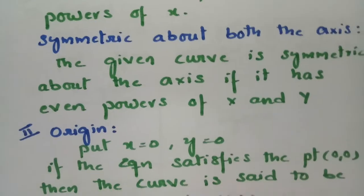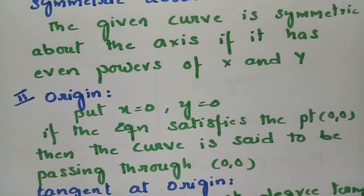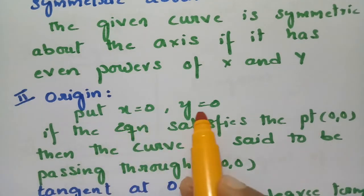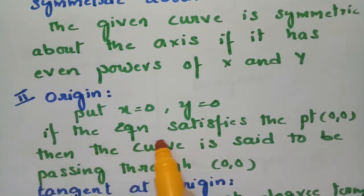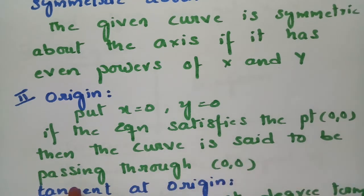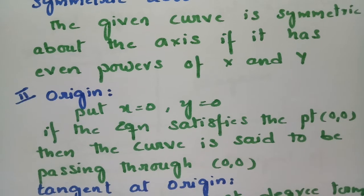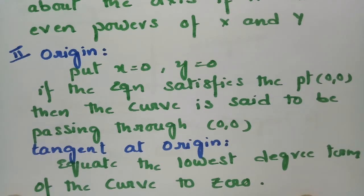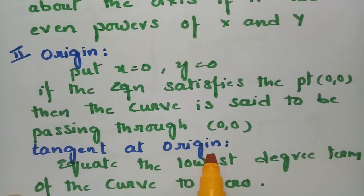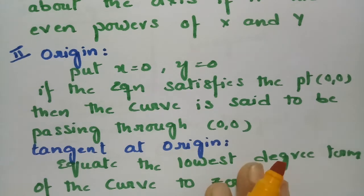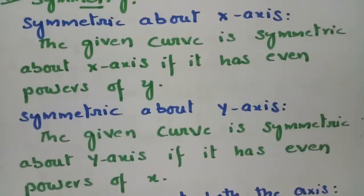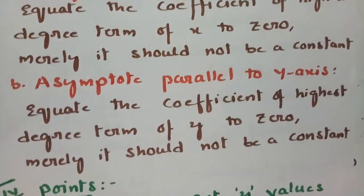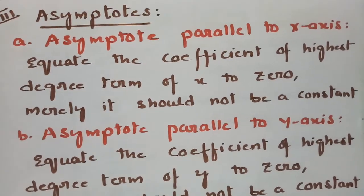The second point is to check the origin. Put x = 0 and y = 0; if the equation is satisfied, the curve passes through the origin. If it passes through the origin, we calculate the tangent at origin by equating the lowest degree terms of the curve to 0.